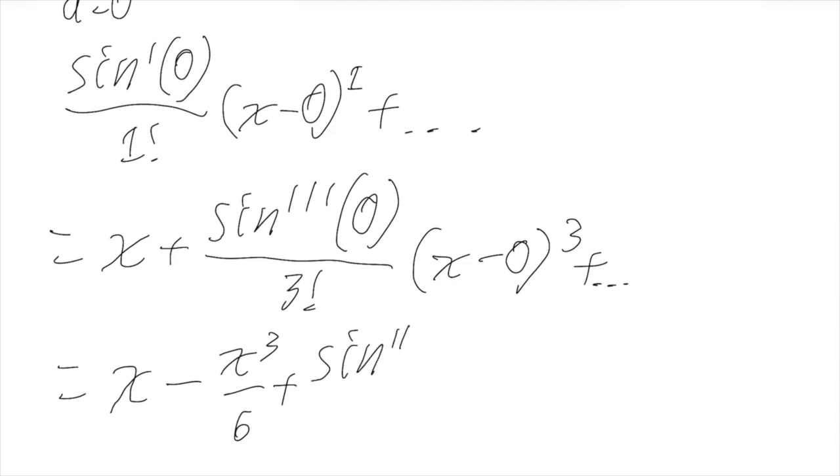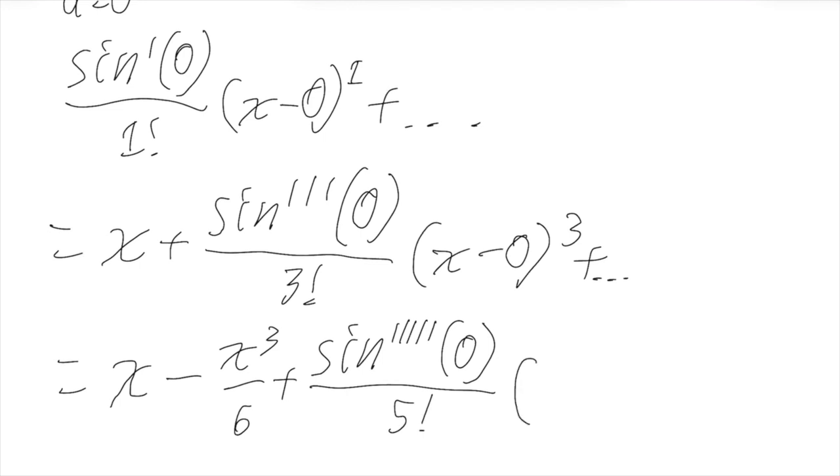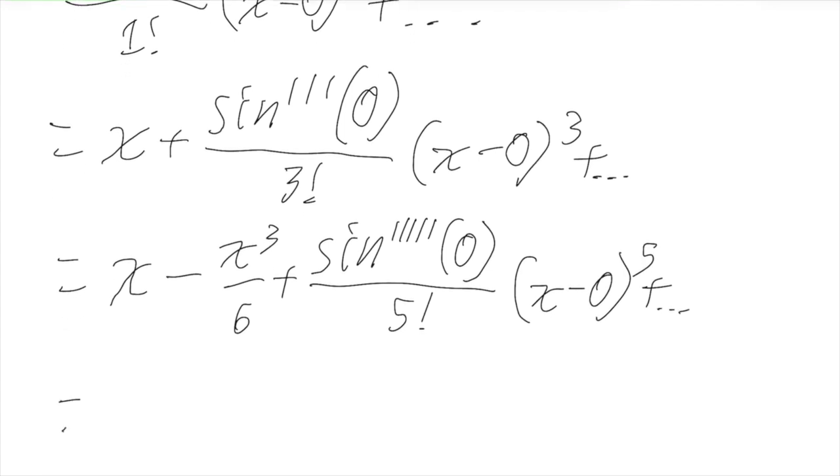And next we add the n equals five term—remember we're skipping the n equals four term—so the fifth derivative of sine at zero over five factorial times (x minus zero) to the fifth. And the fifth derivative of sine is cosine, cosine of zero is one, five factorial is 120, so it'll be x to the fifth over 120.